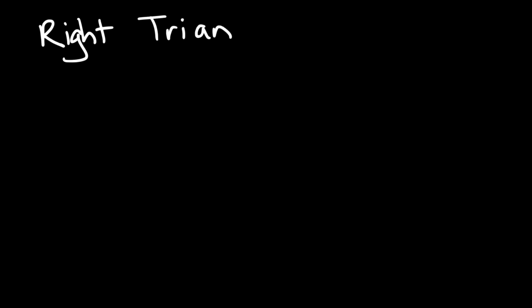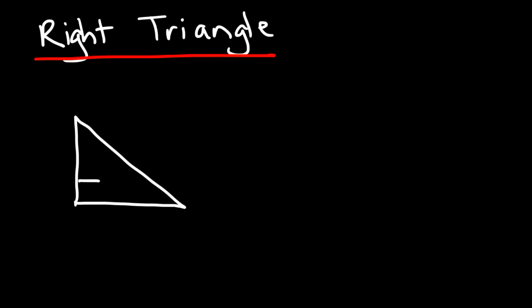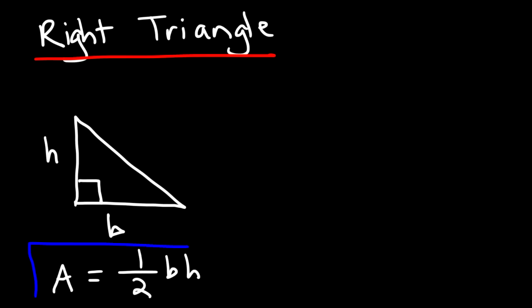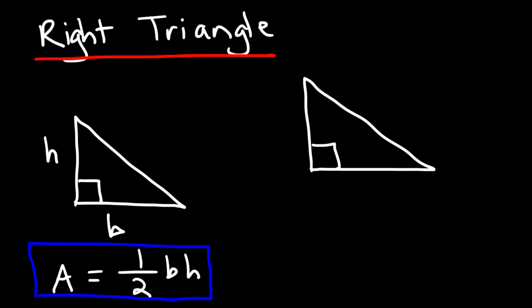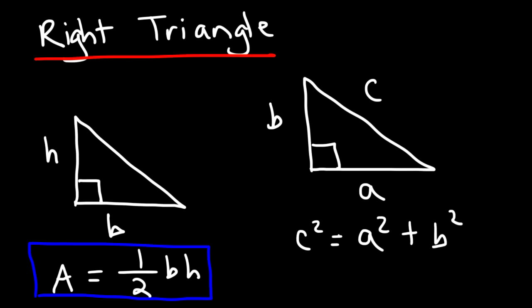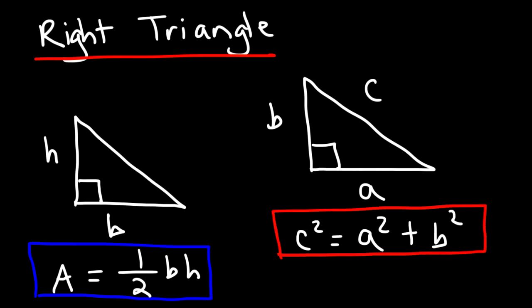Next we have the right triangle. For the right triangle, this is the base and this is the height, and the area is one half base times height. You may also know the right triangle through the Pythagorean theorem — a and b are the legs and c, the longest side, is the hypotenuse, with c squared equal to a squared plus b squared. The perimeter is simply a plus b plus c.